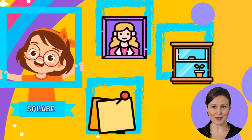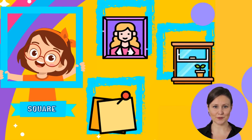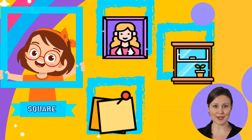The first geometric figure that we will see is the square. It is a regular polygon with four sides of the same length. Can you think of or see anything that looks like a square? Perhaps a window or a frame? Can you see any other shapes like a square?